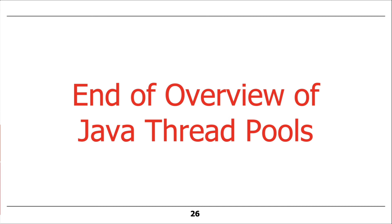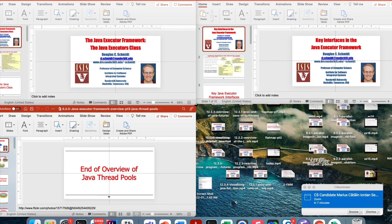That's the end of the overview of Java's thread pools. The key takeaways are the three built-in types: fixed thread pools, cached thread pools, and work-stealing pools. By the time this class is over, you'll have a chance to work with all three models. We'll start with fixed thread pools in assignment 2A, which will be coming out shortly.